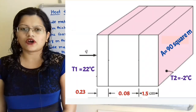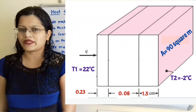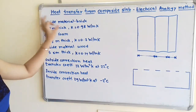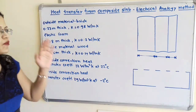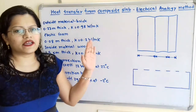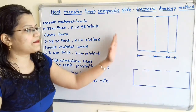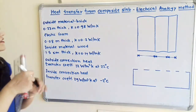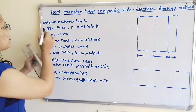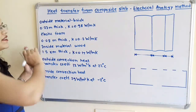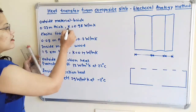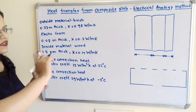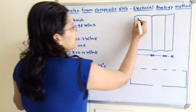We are going to solve this problem by the electrical analogy method. Observing the data, the outside material is brick. We are moving from the outside material towards the inside material from left to right. The first section is the outside brick with thickness B1 = 0.23 m and conductivity K1 = 0.98 W/mK.